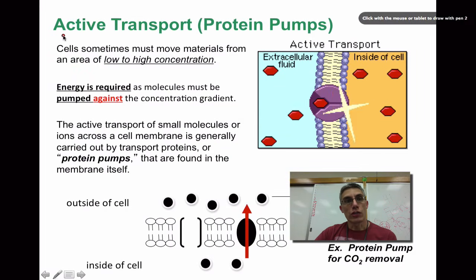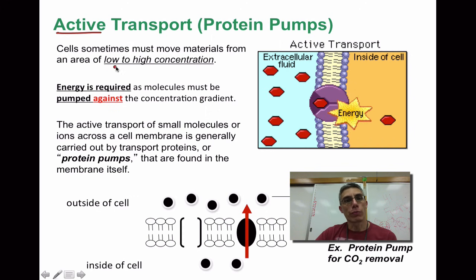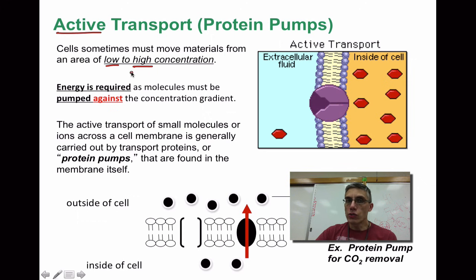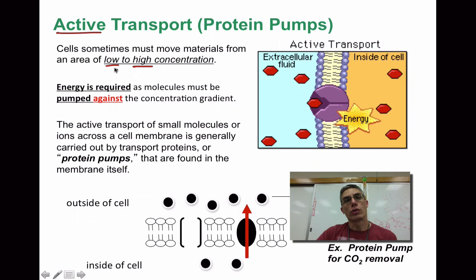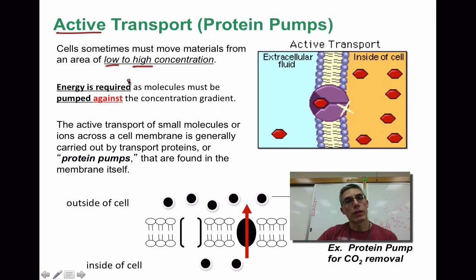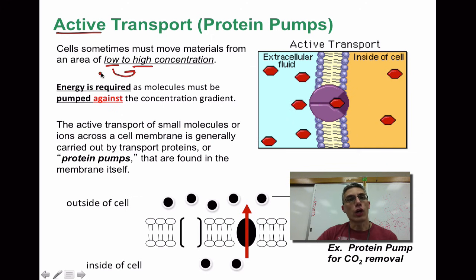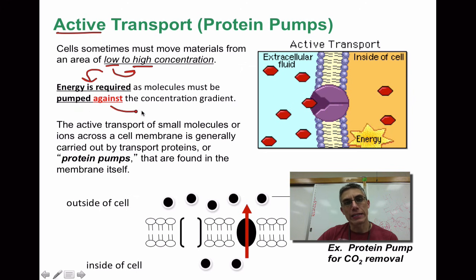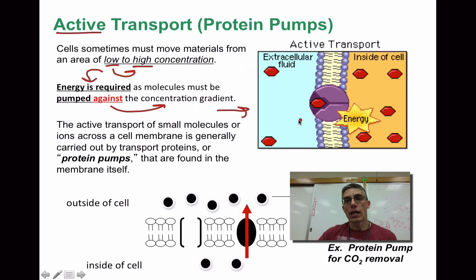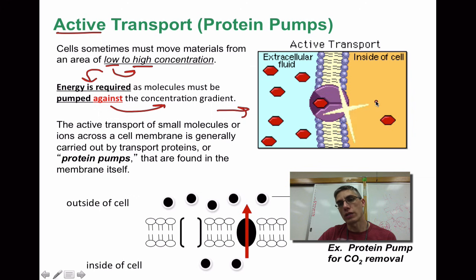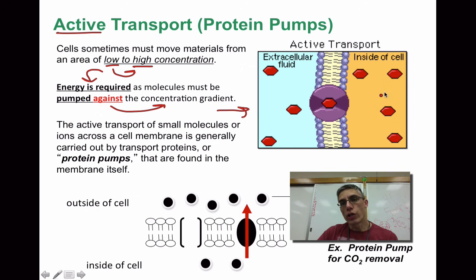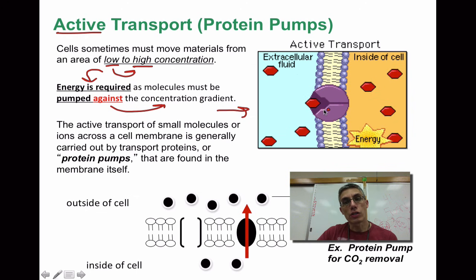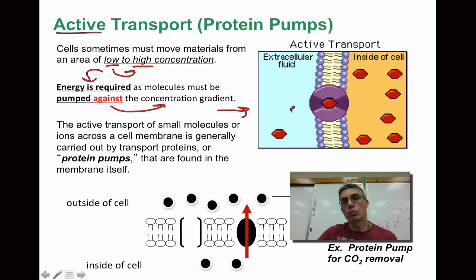The final type of transport is active transport. Cells sometimes have to move materials from an area of low concentration to an area of high concentration — the opposite direction of simple and facilitated diffusion, which move from high to low. The only way this can happen is if energy is put into the system by the cell. Energy is required as molecules must be pumped against the concentration gradient. In the animation, red molecules are constantly being pumped to the right-hand side. Even when a lot of molecules accumulate there — which would naturally tend to move back left — the cell puts energy in to continue moving those red molecules across.